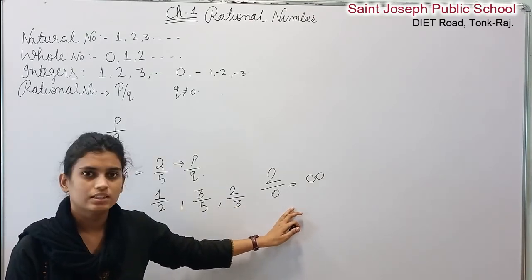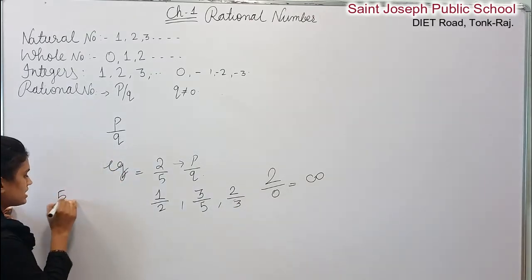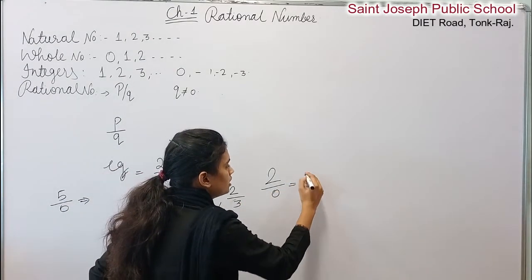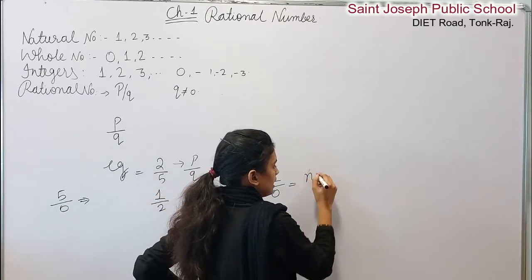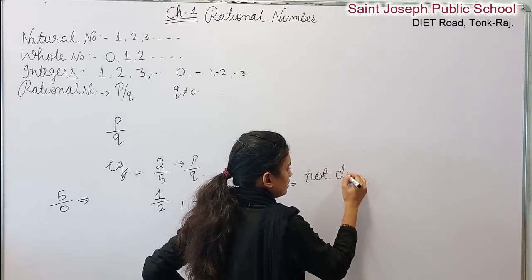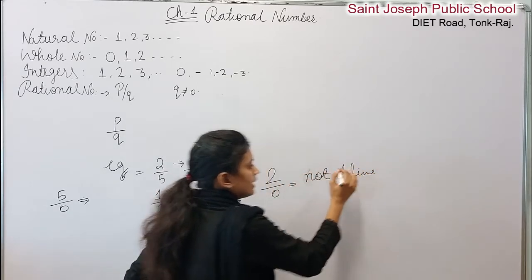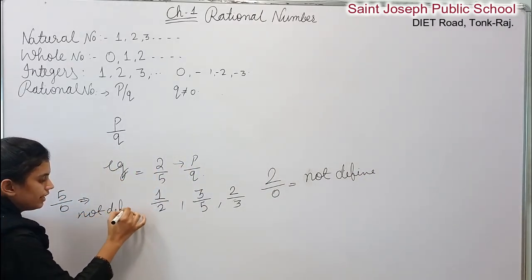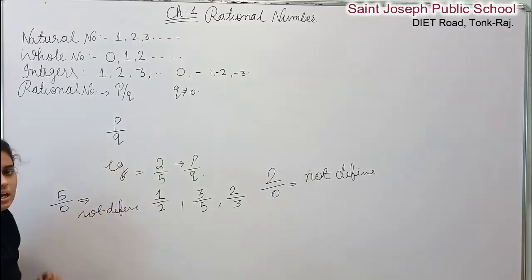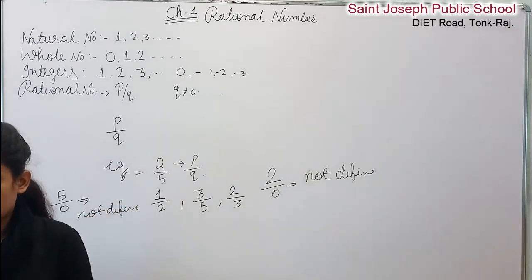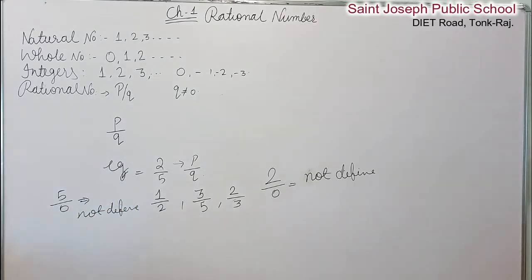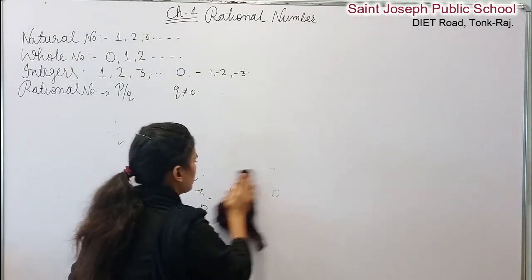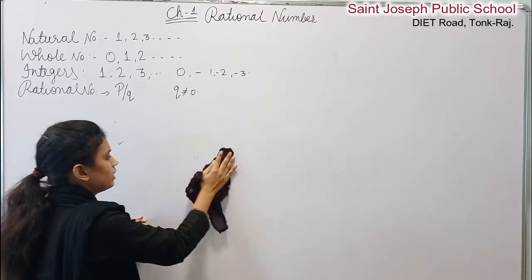If the denominator is 0, then the answer is not defined. So the denominator should never be 0. Now, to understand rational numbers, we have to learn some properties. We will apply these properties to rational numbers.